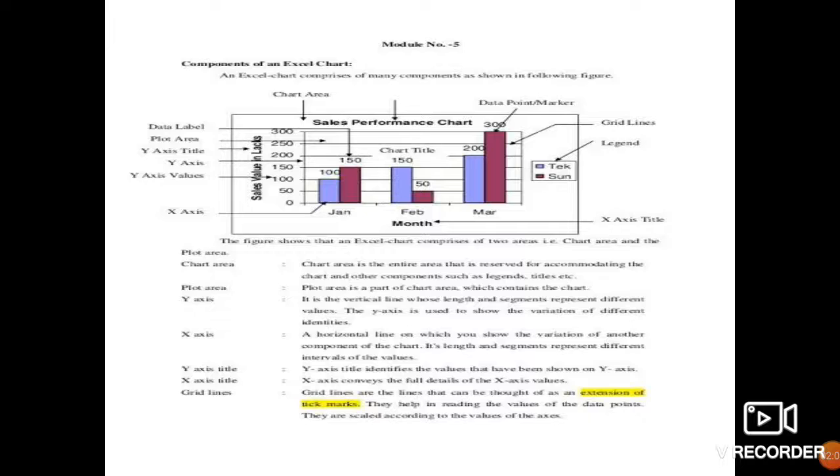A chart can be a 2D chart or a 3D chart. If it is a 2D chart, it will have x-axis and y-axis and if it will be a 3D chart, it will have x-axis, y-axis and z-axis. So in 2D chart, x-axis represents the horizontal axis of chart and y-axis represents the vertical axis of the chart. Next comes the chart title.